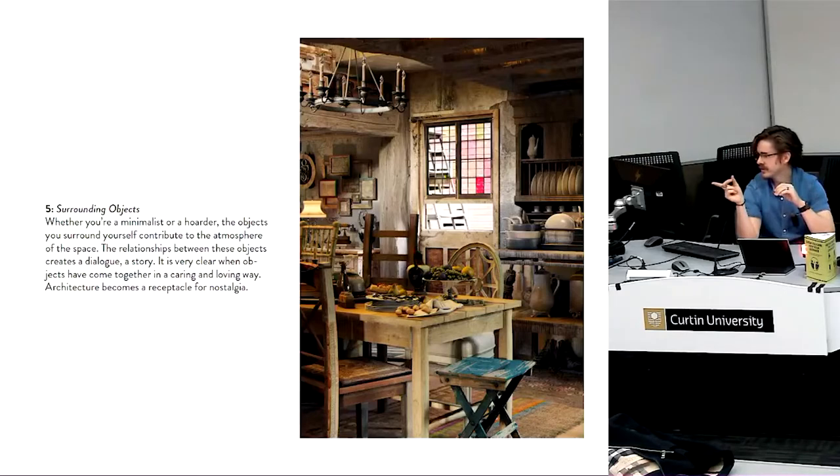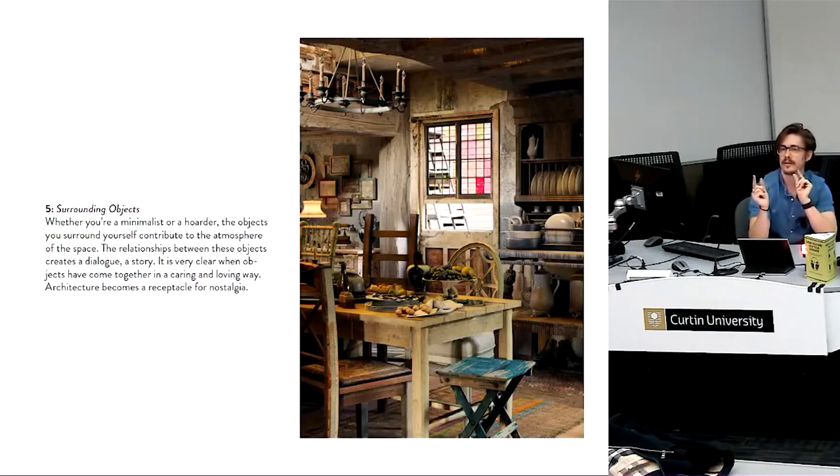Now, what he says here is the relationships between these objects create a dialogue, a story. What that means is that two objects placed together in a room are going to have some sort of contrasting dialogue conversation between one another. So what you decide to place in a room, particularly if you're doing something like a museum space or a gallery, which is relatively sparse except for a few objects. The objects that you put in there collectively are going to say something different than they do individually. So you need to think about the relationships between these objects, what they say about each other, right?